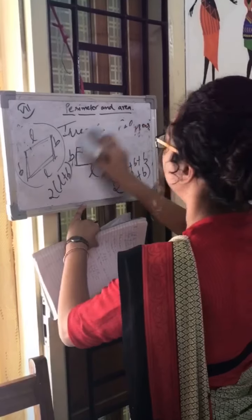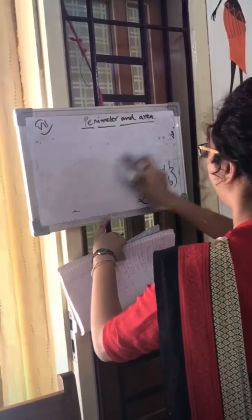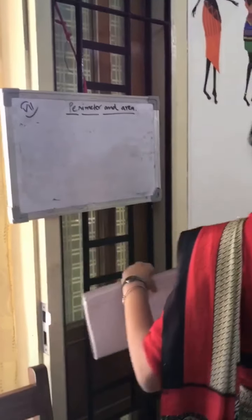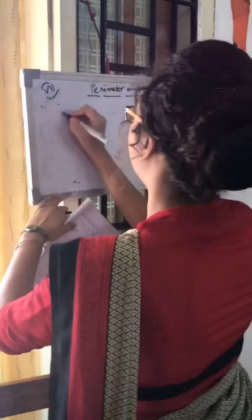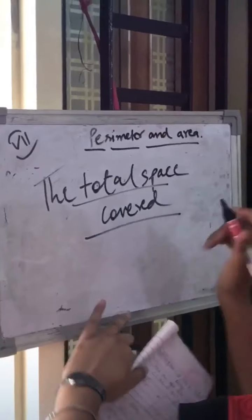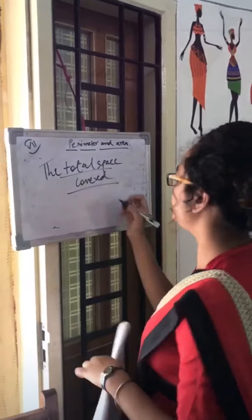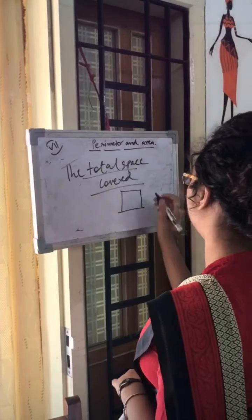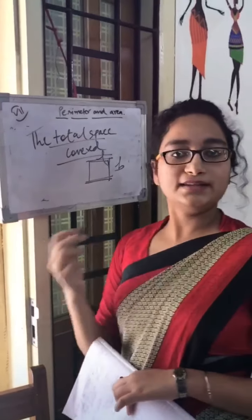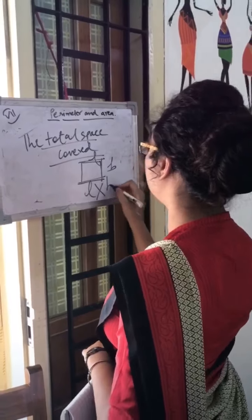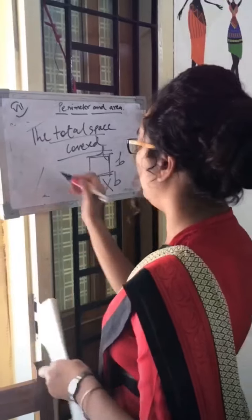Now we will move to the concept of area. What is the meaning of area? Any figure — the space it covers gives us the area of that particular figure. The total space covered gives us the area of any particular figure. For example, if this is a rectangle with length L and breadth B, we find the area by multiplying length into breadth.